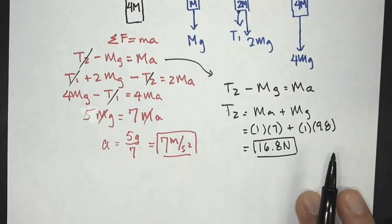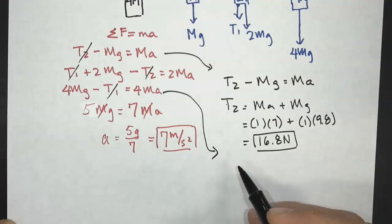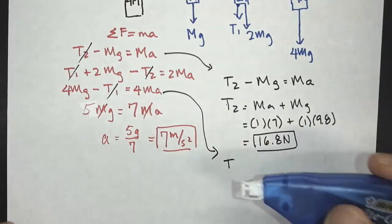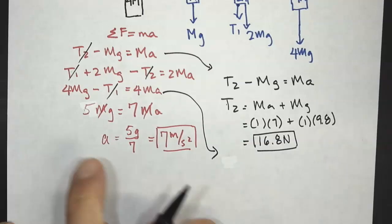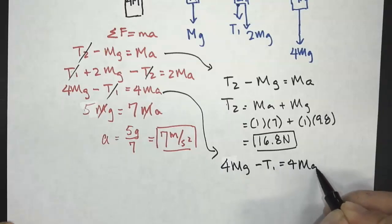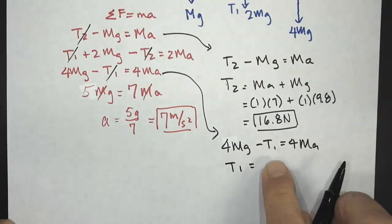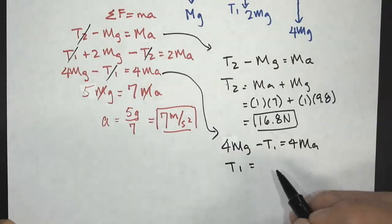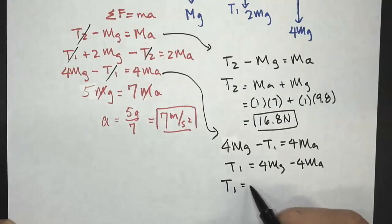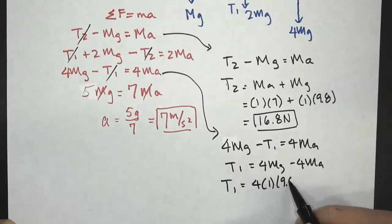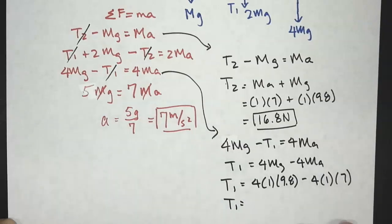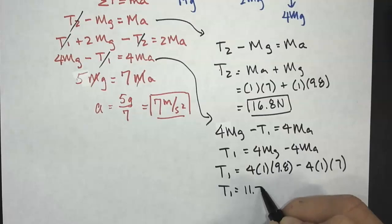Next we're going to solve for T1 using the third equation: 4Mg minus T1 equals 4Ma. Solving for T1: T1 equals 4Mg minus 4Ma. Substituting M = 1, g = 9.8, A = 7: T1 = 4(1)(9.8) minus 4(1)(7) = 39.2 minus 28 = 11.2 newtons.